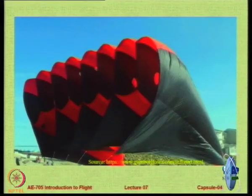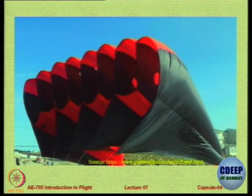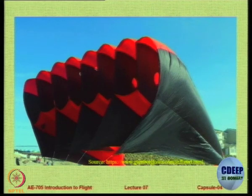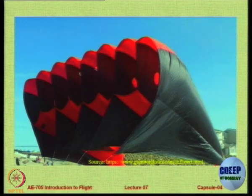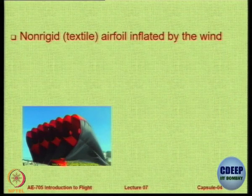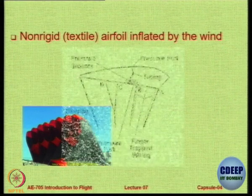Let us look at parafoils — aerofoils that get inflated with air, used for ram air parachutes. They have a cut in the front and a proper shape at the back, typically around 18 percent thick. As ambient wind enters, the pockets fill up and it acquires a parafoil shape. This is a non-rigid textile aerofoil that is wind-inflated.